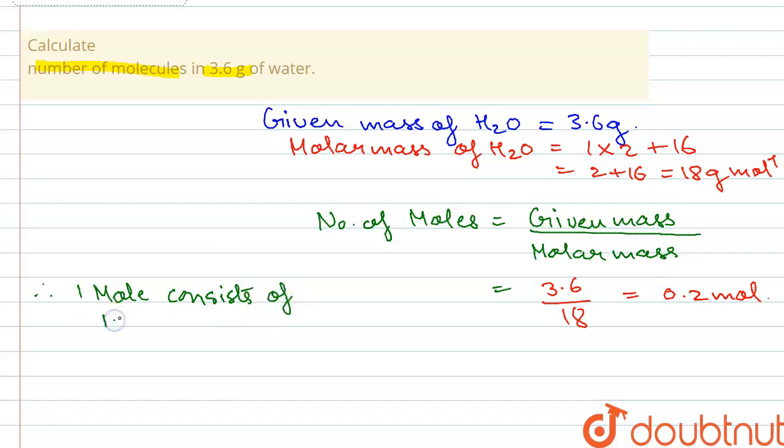6.022 × 10^23 molecules. This is the Avogadro number. So if there are 0.2 moles, then 0.2 mole will consist of 6.022 × 10^23 times